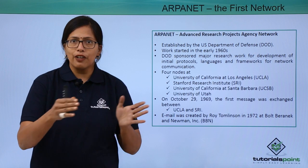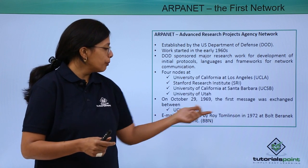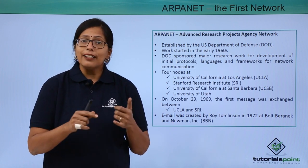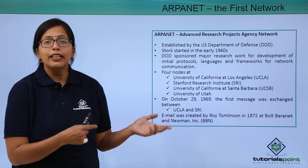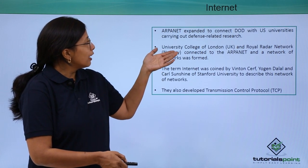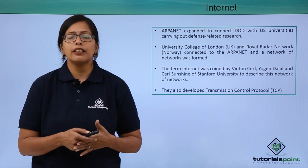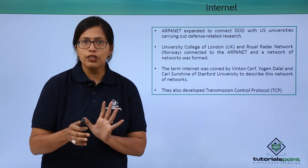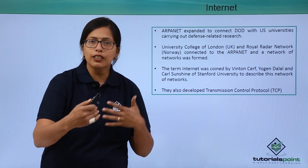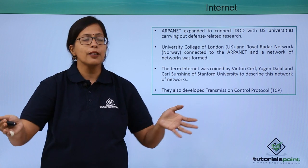After this success, in 1970 a company named Bolt, Beranek and Newman Inc. — BBN — was also connected to the ARPANET. In 1972, Roy Tomlinson of the same company started using email messages. ARPANET then expanded to connect DOD with US universities that were carrying out defense-related research, and the size of the network slowly started increasing.